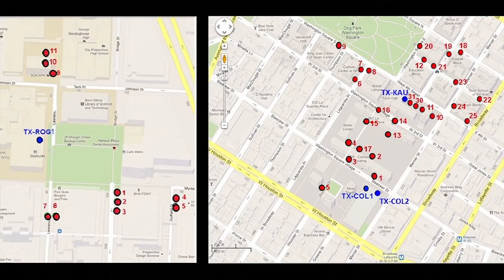In total, we had four transmitter locations, over 30 receiver locations, and we conducted these measurements over four months to help us characterize and model 28 GHz propagation.